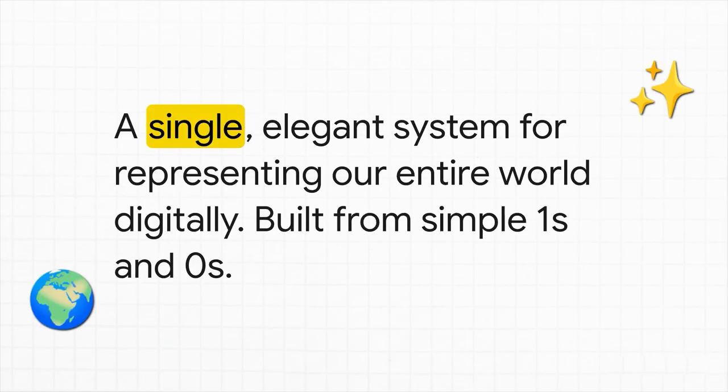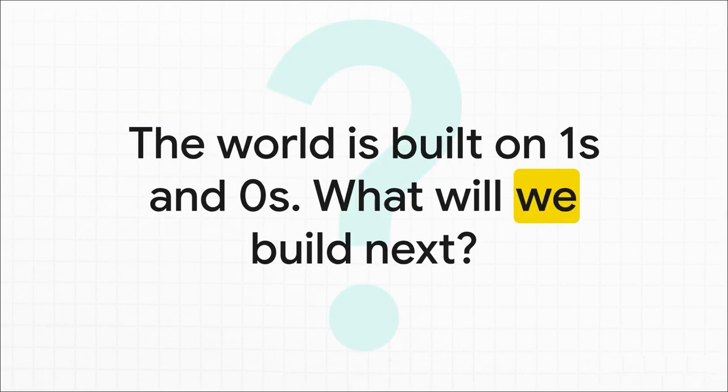And that is the beautiful, simple truth at the heart of it all. Our entire vast, complex digital universe is built on the simplest possible foundation you can imagine — a switch that is either on or off. It is one single elegant system for representing our whole world in a way a machine can understand. So as educators, when we're trying to explain this digital magic, it all comes back to this one fundamental idea: a language of just two symbols. And that leaves us and our students with a pretty exciting question to think about — if all of this was built from just ones and zeros, what are they going to build with them next?